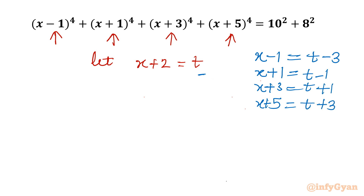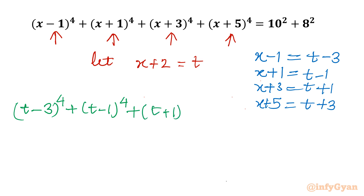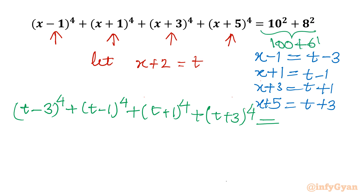Now I will convert our equation in variable t. So our equation will become (t−3)⁴ + (t−1)⁴ + (t+1)⁴ + (t+3)⁴ = 100 + 64, which is 164 on the right-hand side.